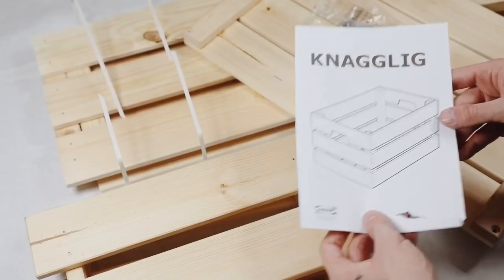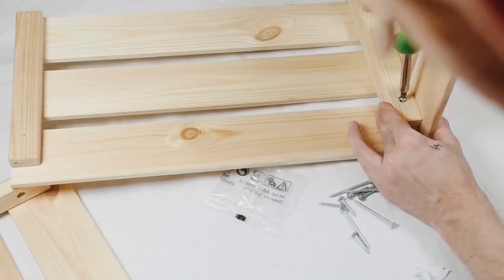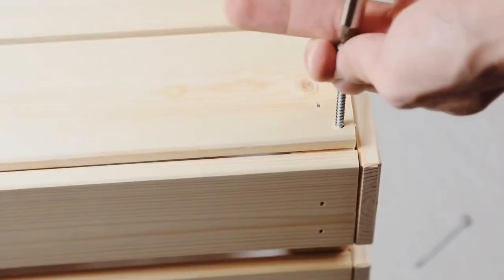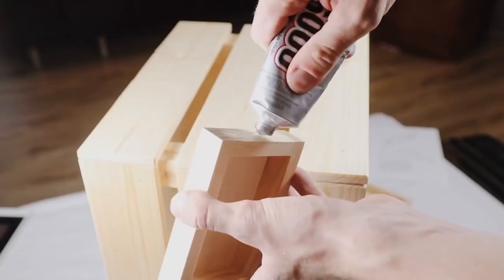This is the Naglig crate, which you can pick up for about $10 at IKEA, and I started off by constructing it based on the instructions. You have to screw all of the elements together, and once they're all screwed up, you have a basic wooden crate.